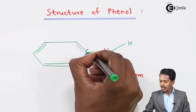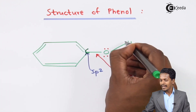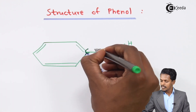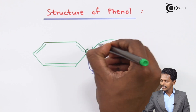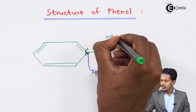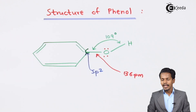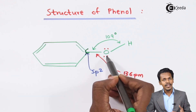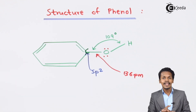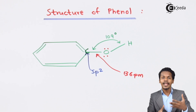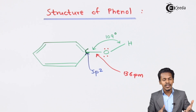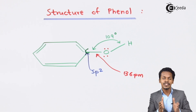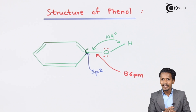Now let me talk about the bond angle. The bond angle between the carbon atom, the oxygen atom, and the hydrogen atom is found to be 109 degrees. The reason is that the oxygen consists of two lone pairs of electrons, which causes lone pair-bond pair repulsion, and that is why the bond angle is 109 degrees.